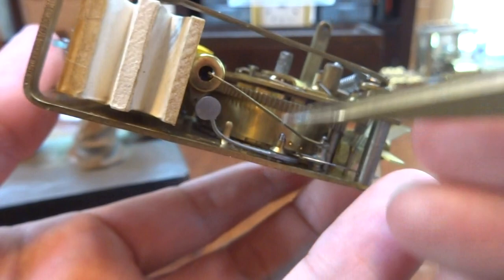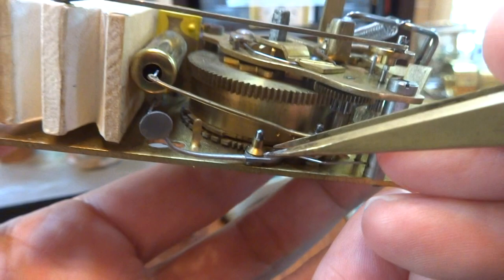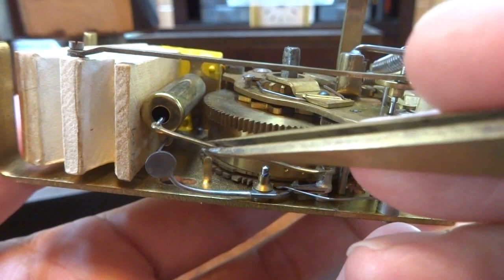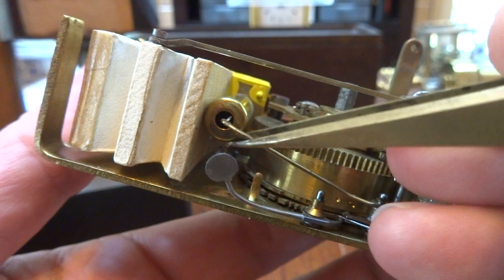So what happens, similar to a singing bird box movement, you have cams on the bottom of the going barrel. And there are levers that fall in and then raise as it hits the cam set. You have two of them. One cam set controls the whistle pitch. As this arm goes out, it produces a deeper note. So it's a similar concept to a trombone.